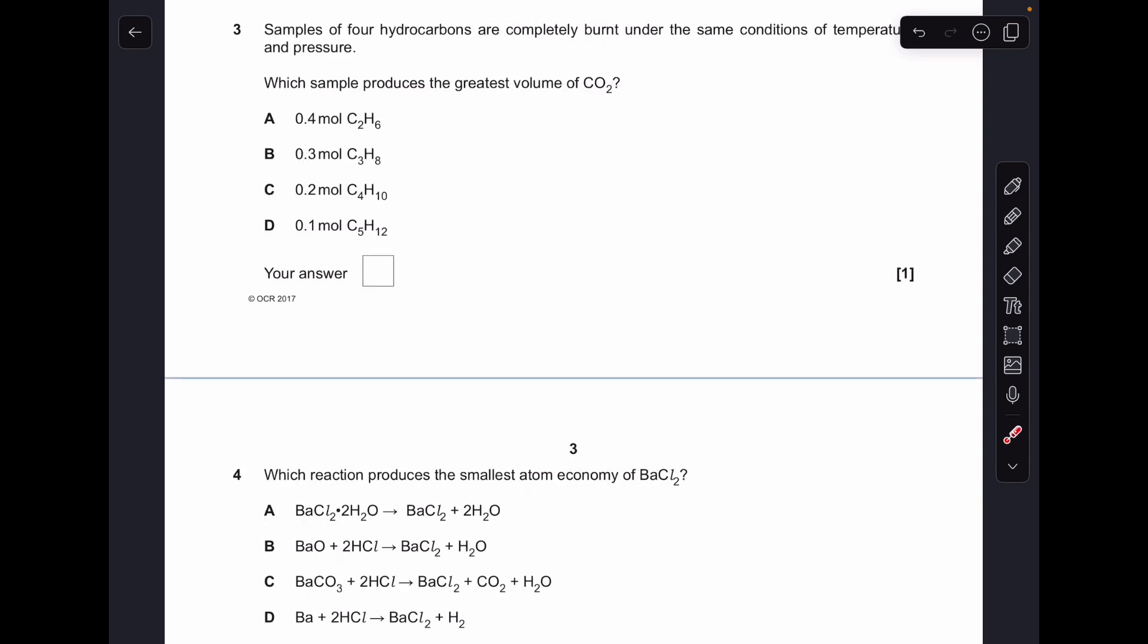Moving on to number 3, so at the heart of this calculation is every mole of carbon in the hydrocarbon is going to generate the same number of moles of carbon dioxide. So all we've got to do is work out how many moles of carbon we've got, and that's going to tell us how many moles of carbon dioxide. So if you've got 0.4 moles of C2H6, you're going to have 0.8 moles of carbon, 0.4 times 2, so that means you're going to get 0.8 moles of CO2. The highest moles of CO2 is 0.9, so that's the greatest volume. So B was the answer.